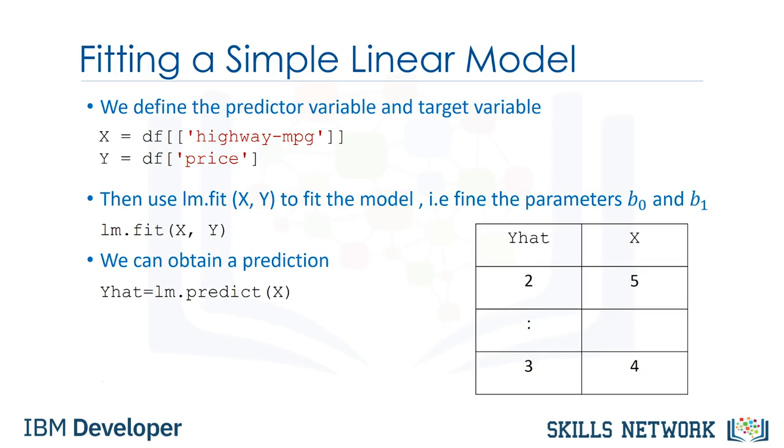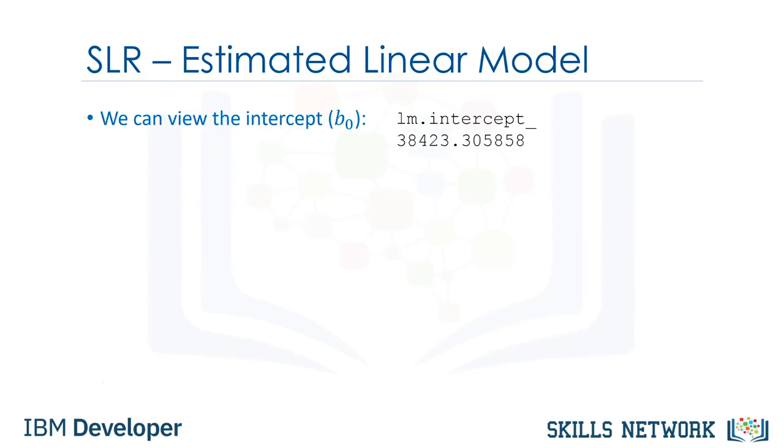The output is an array. The array has the same number of samples as the input x. The intercept b0 is an attribute of the object lm. The slope b1 is also an attribute of the object lm.